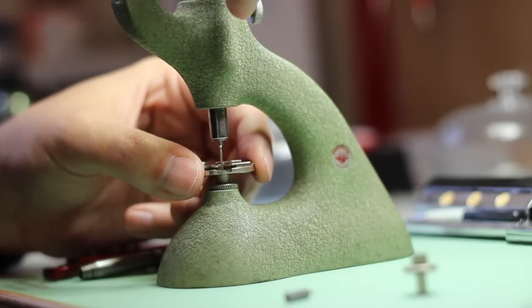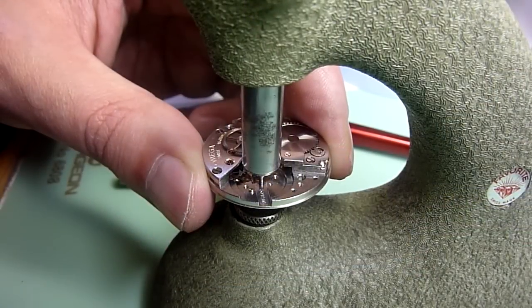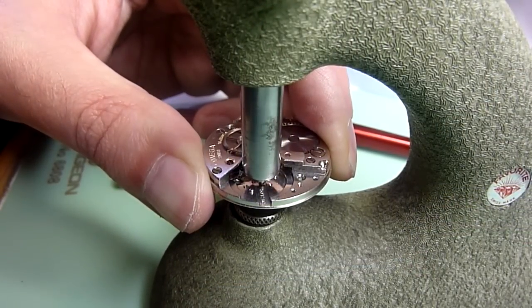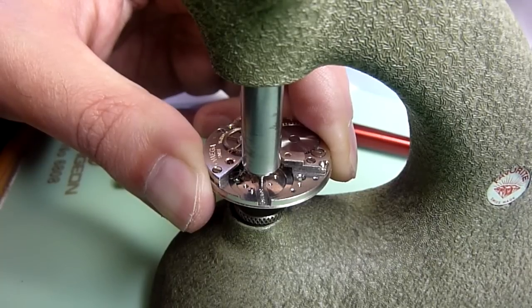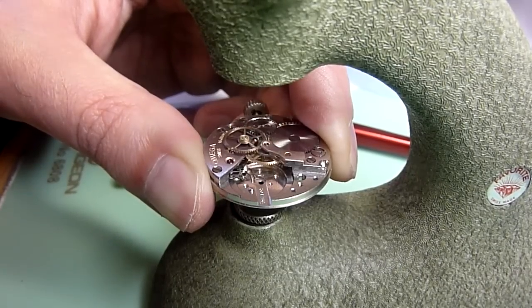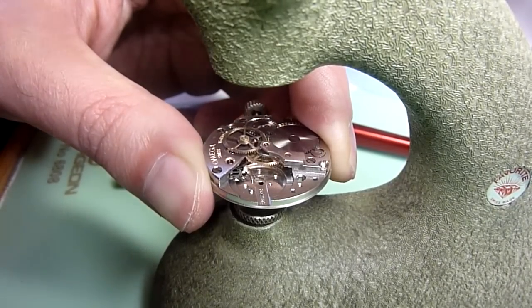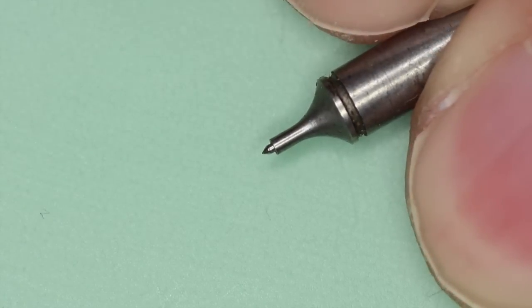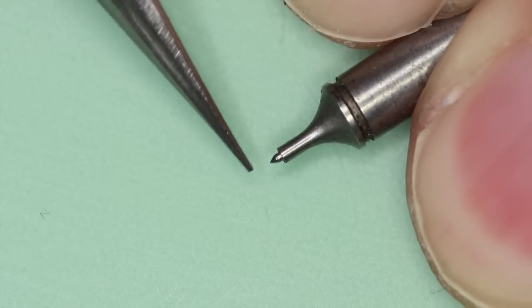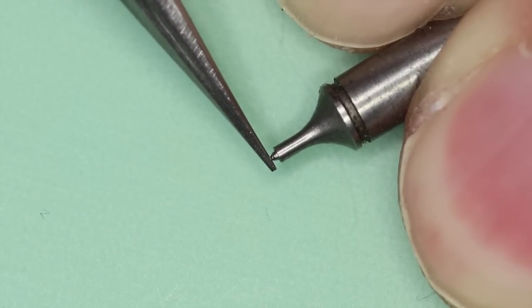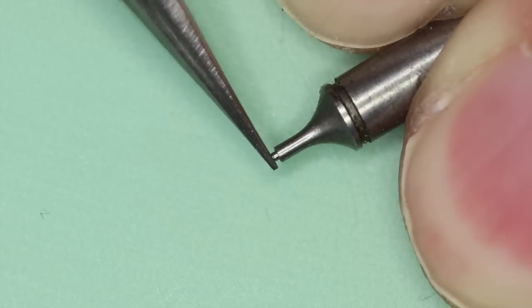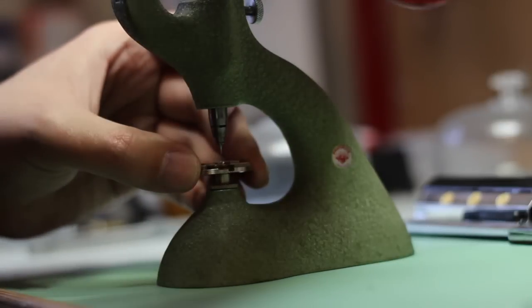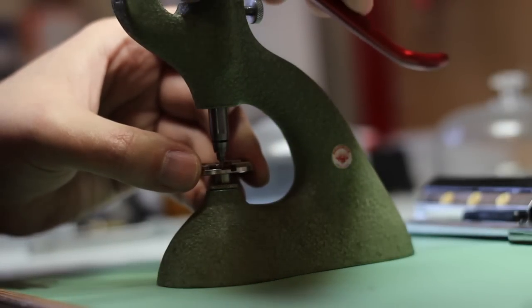Once the hole is burnished to the correct diameter we're ready to press in the new jewel. For that we're going to use one of these, it's called a pump pusher. As you may notice it's got a spring loaded taper point on the end, this is for making sure that the jewel is set perfectly central as the pusher presses down.